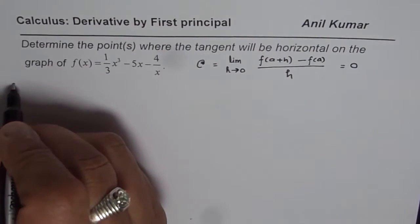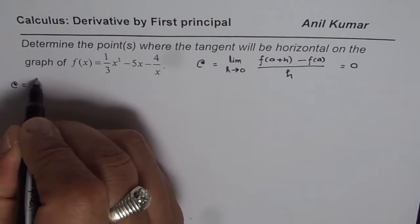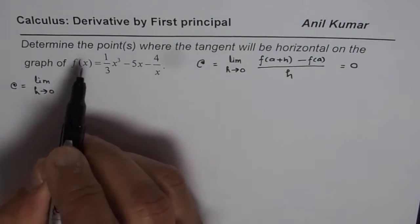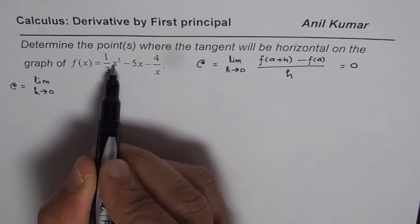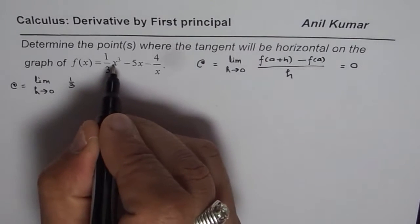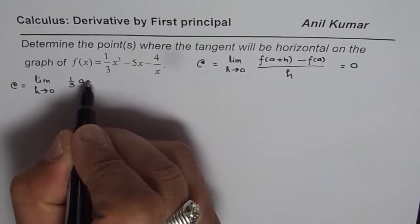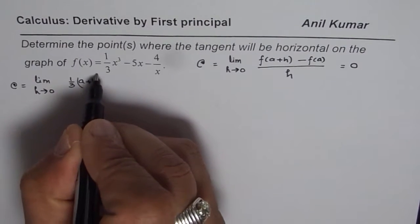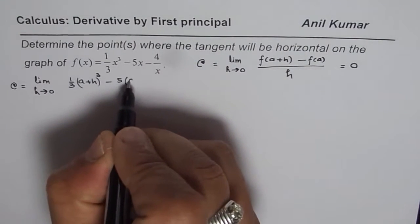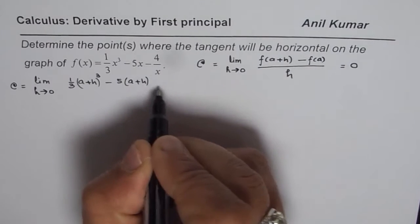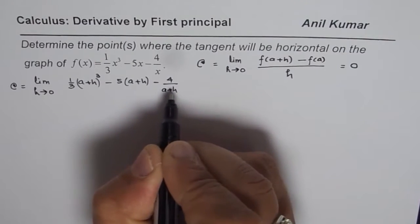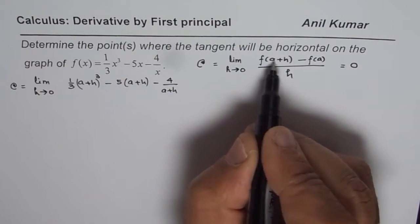Let's begin by finding the instantaneous rate of change. It will be the limit as h approaches 0. f(a+h) means replace x with a+h. So what we get is (1/3)(a+h)³ — that is the cubic function. Then we have the linear function: -5(a+h), and the reciprocal function: -4/(a+h). So that is the first part, f(a+h).